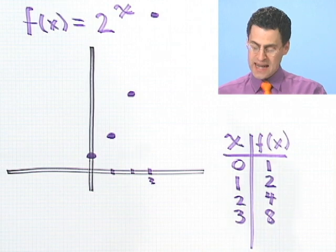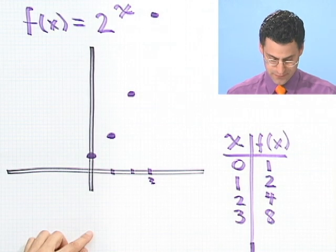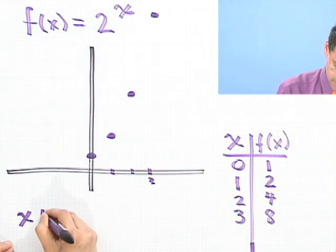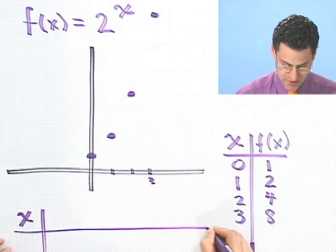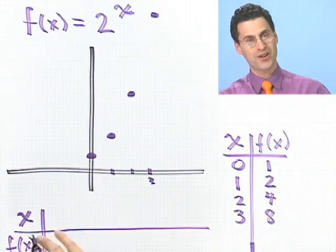But what about negative x's? Let's see, where can I put them? How do I make a chart over here? This illustrates that charts can be made any way at all. You don't always have to be vertical, you can be horizontal.